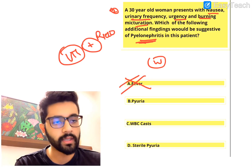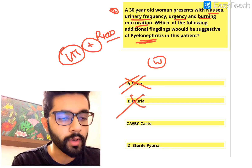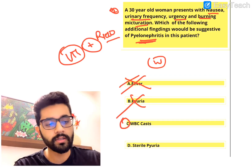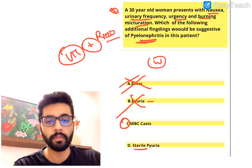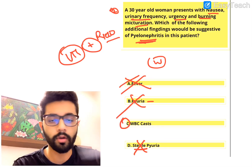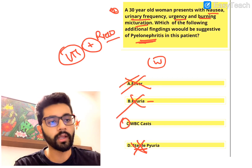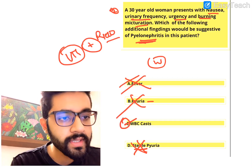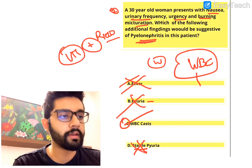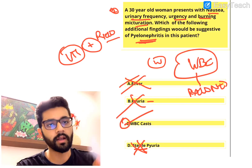Pyuria means bacteria in urine - bacteriuria - and can be present in both pyelonephritis and simple UTI, so it's not the answer. Sterile pyuria means high WBC count in urine but no organisms on culture, so that's not indicative here either. The answer must be C) WBC casts. WBC casts are definitive or indicative of pyelonephritis - if this woman has WBC casts in her urine, she has pyelonephritis.